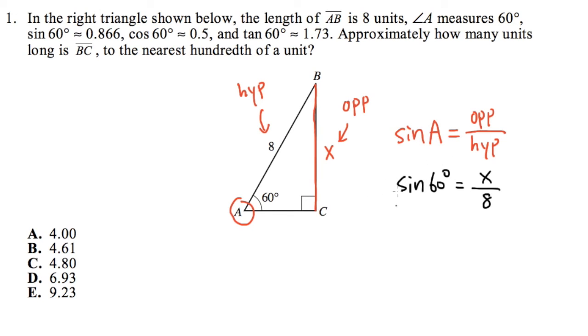Sure, because right here, sine of 60 degrees—it told us it's 0.866. So 0.866 is sine of 60 degrees, and this is equal to x over 8.